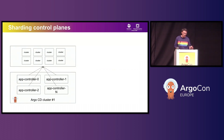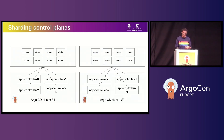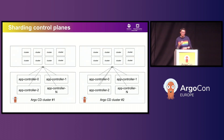To work around some of those issues, some people try to further partition their groups of clusters and then shard their control planes. But this only postpones the problems to a later point in time, and you then need to decide which Argo CD control plane to use for which cluster. Again, the core issues still haven't been solved.